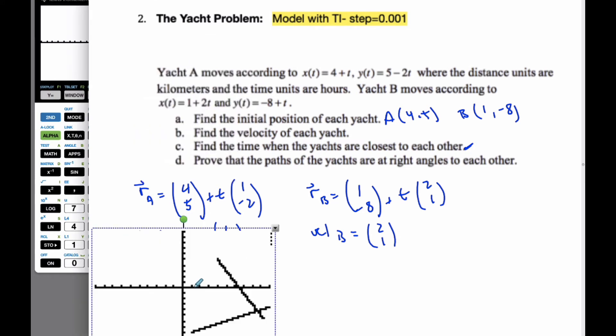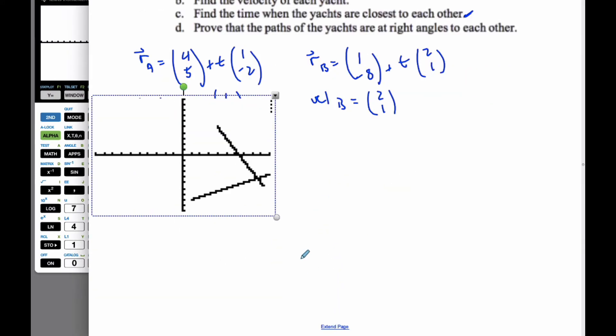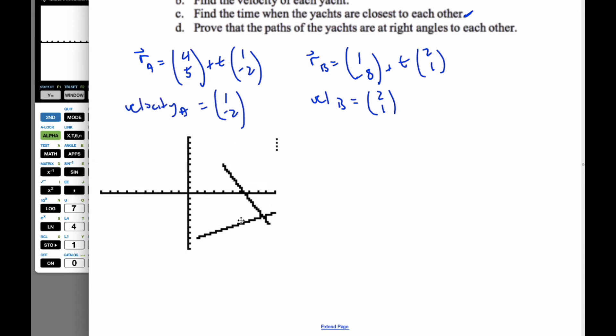So we want to find a time when they are actually closest to each other. So I'm going to steal the graph. We're going over here. And so what we're trying to do is I know that on this particular scenario, here is yacht A, and this is, let's say, we'll call it point A. And this one here, B, is also the entire equation here. What I'm going to do is I'm going to find the magnitude of vector AB. That's the distance between the boats. And I want this magnitude to be as small as possible.